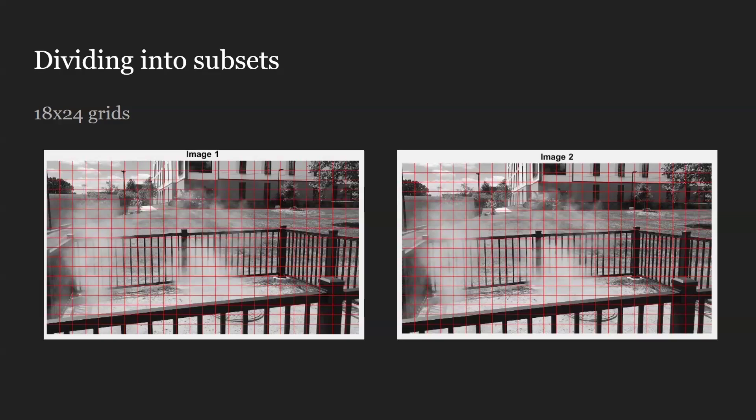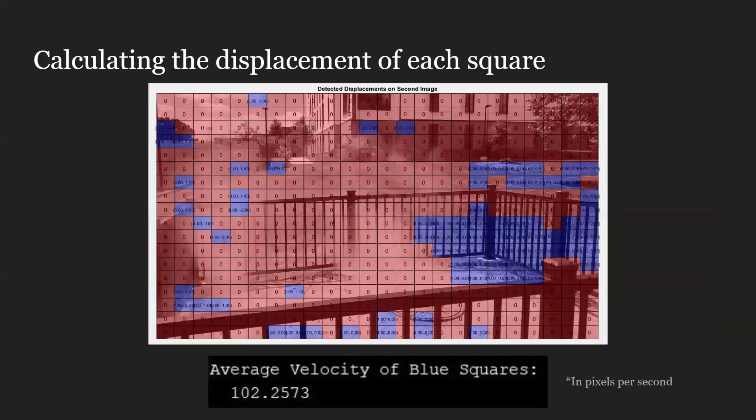We have here 18 by 24 grids. After that, we calculate the displacement. The red squares are calculated to have no displacement, but the blue squares have an X and Y displacement change.